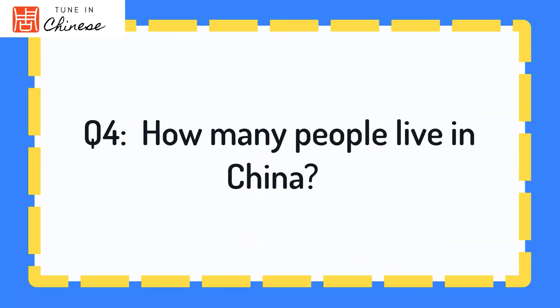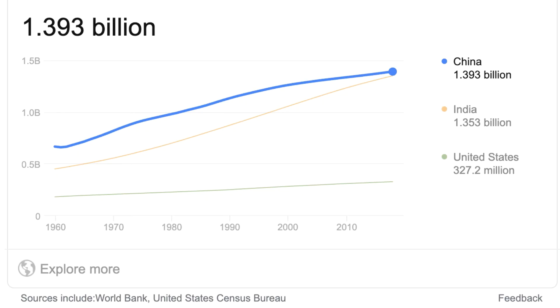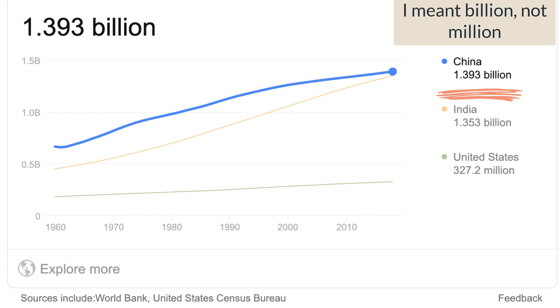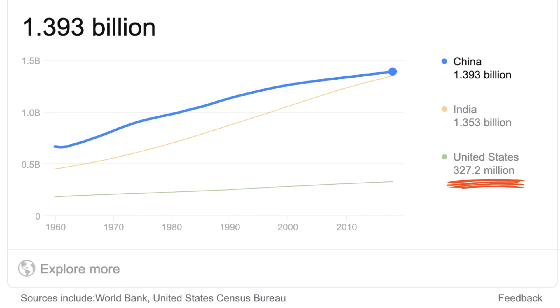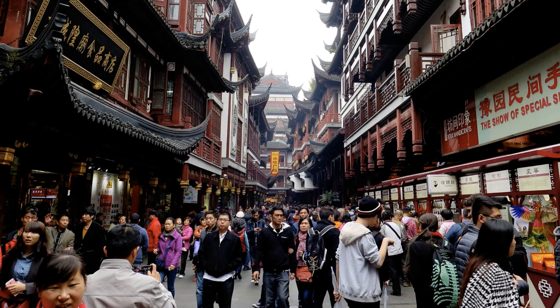Question number 4: How many people live in China? I actually did some research before filming this. According to data from the World Bank updated on April 8, 2020, there are 1.39 billion people in China, and there are 328 million people in the United States. If you remember from our last episode, the size of China and the United States are very similar, so you can imagine with the much bigger population, some cities in China are much more dense than here.